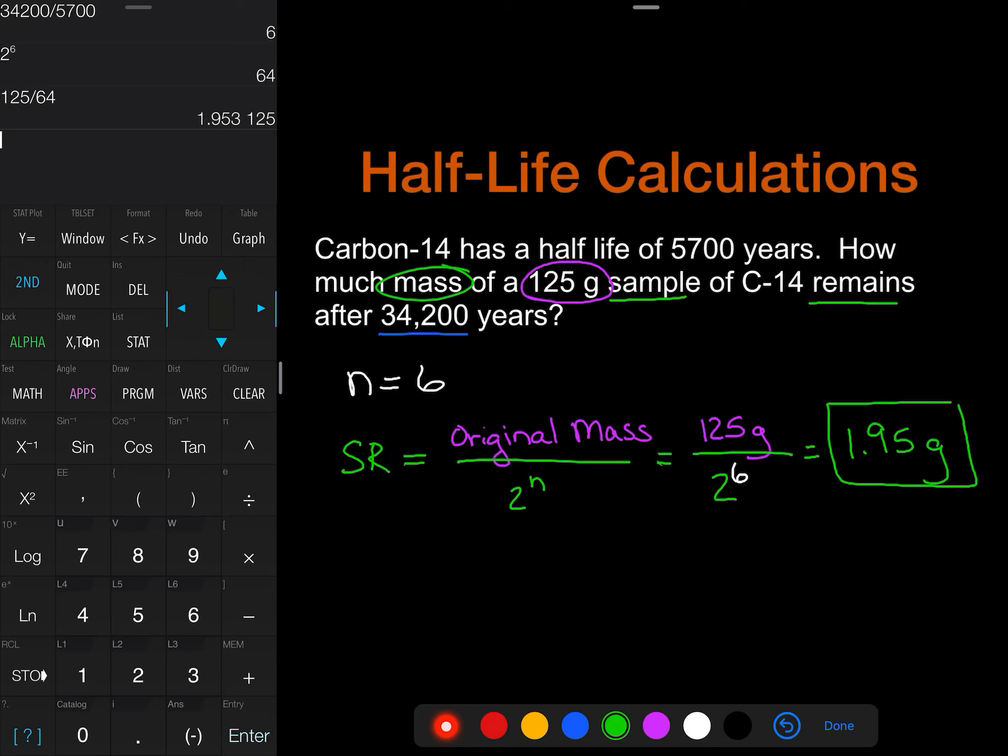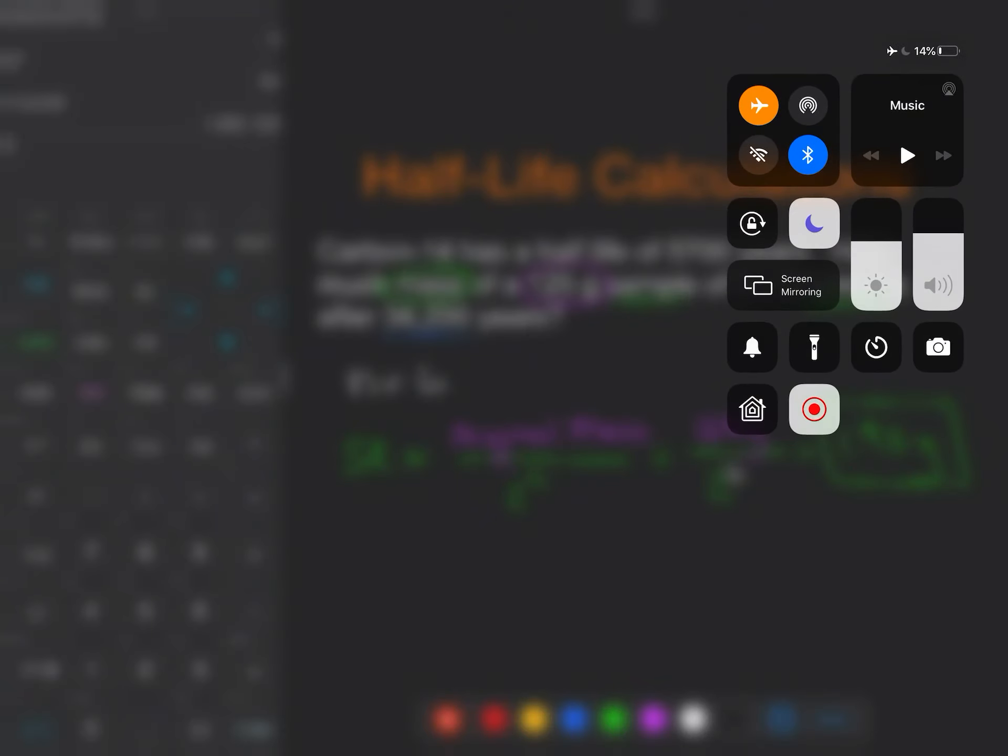grams and that is the amount of sample that remains of this carbon-14 sample after 34,200 years, which is a really long time, and that's a little bit about how we determine half-life and sample remaining.